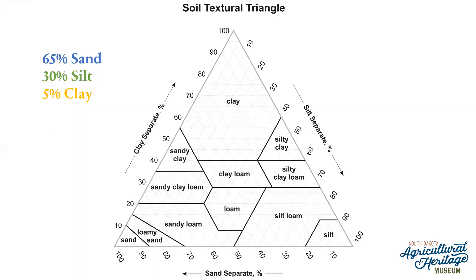Since I have 65% sand, I'm going to place a blue dot along the bottom axis at 65%. Because the arrow on the bottom is pointing towards the left, that is the direction I will draw my line — up and to the left. You can see I've highlighted that line in blue to make it easier to follow.